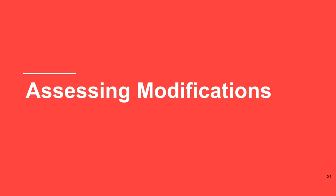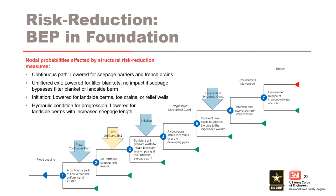Assessing modifications. The formulation of structural risk reduction measures to address failure modes will focus on one or more nodes of the event tree to reduce the likelihood of their occurrence. These are the nodes that are typically targeted for backward erosion piping. Structural risk reduction measures must either interrupt the continuous flow path, provide a filtered exit, or reduce hydraulic gradients.